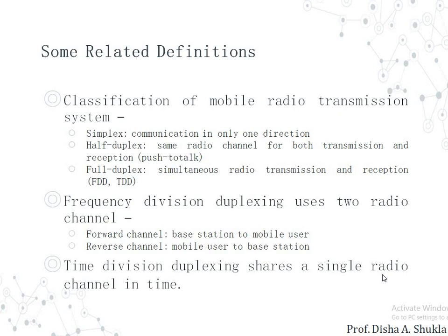A simplex system is one where communication occurs only in one direction — the sender transmits data to the receiver, but the receiver does not send data back. A classic example of a simplex system is television. A half duplex system allows transmission from both sides, but only one can talk at a time. When the sender is sending, the receiver cannot transmit, and vice versa. An example of a half duplex system is a walkie-talkie.